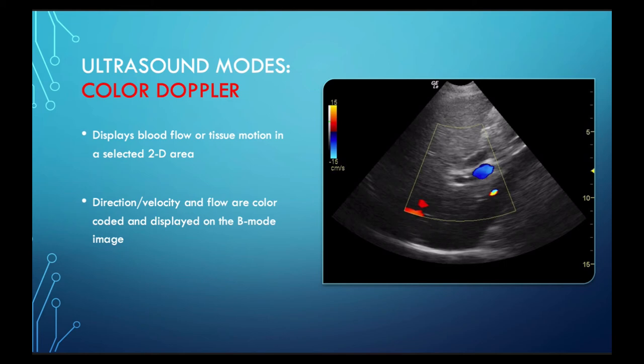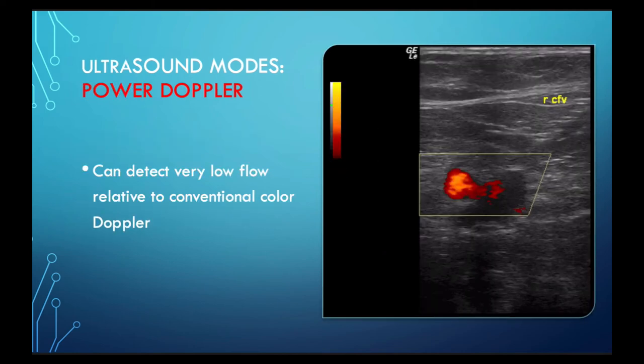Color Doppler relies on the same principles as spectral Doppler, but it's not graphed over time. It looks at the velocity changes on a specific window — you see the outline of that yellow window in the middle of the screen. Color Doppler gives you a colored depiction of the flow direction within that window, helping you identify vascular structures from non-vascular structures. It's important to note that the red and blue colors don't necessarily correspond to arterial or venous flow — red corresponds to flow going towards the probe and blue for flow going away from the probe.